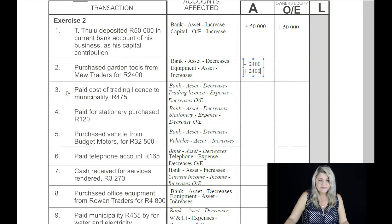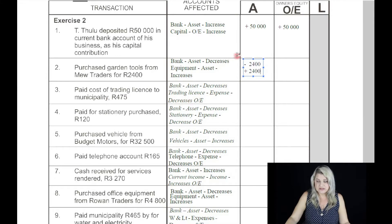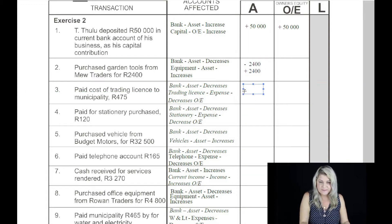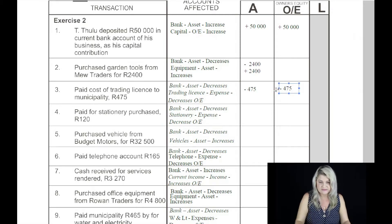On the third, we read: paid cost of trading license to municipality, 475 Rand. It's a cash transaction, so it's bank, which is an asset, and it decreases. Trading license — that's the other account — is an expense account, and that decreases owner's equity. Remember, an expense always decreases owner's equity. So the bank decreased because we had to pay for the license — 475 Rand. And owner's equity also decreases by 475 Rand.